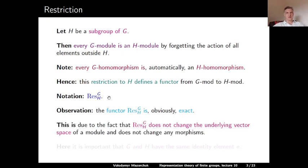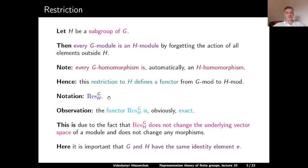If you have an exact sequence of G-modules, it is exactly the same sequence with the same morphisms as a sequence of restricted H-modules. So if the original sequence is exact, the outcome will also be exact. For this, it is very important that the group G and any subgroup H have the same identity element.